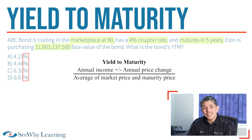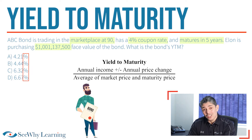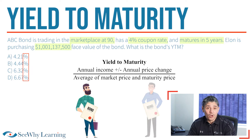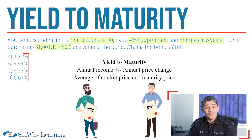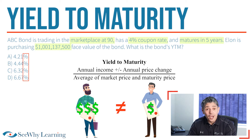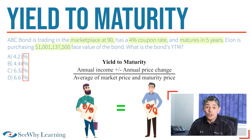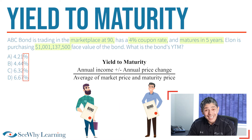What that tells me is that if Elon owns more than a billion dollars face value of the bond, and I only own a hundred dollar face value, we will both receive different dollar amounts of interest. But our yield as a percentage would be identical. After all, it's the same bond.